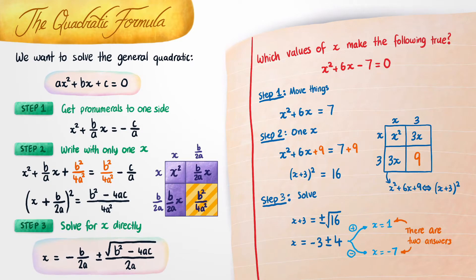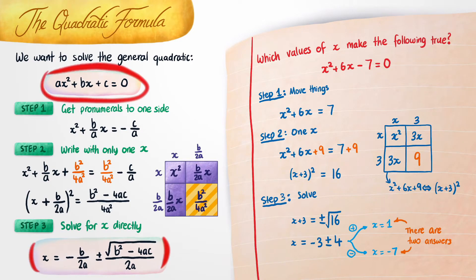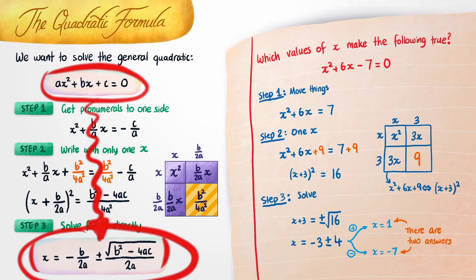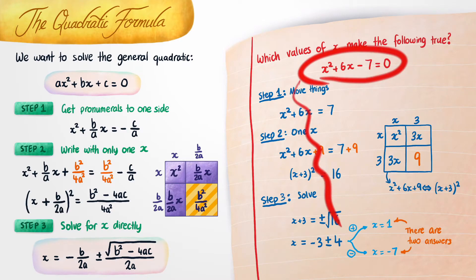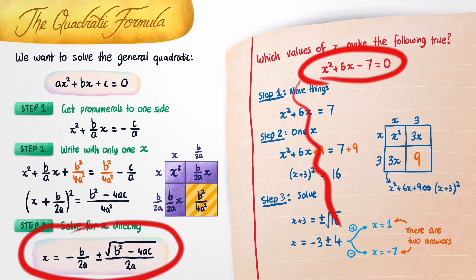The whole idea of the quadratic formula is that any time you see a quadratic in this form, you can skip all of these steps because you know the final answer is just going to be this formula. So therefore, if we had a problem like this one, we don't need to repeat any of these steps. We could just use this quadratic formula and save ourselves a whole heap of time.